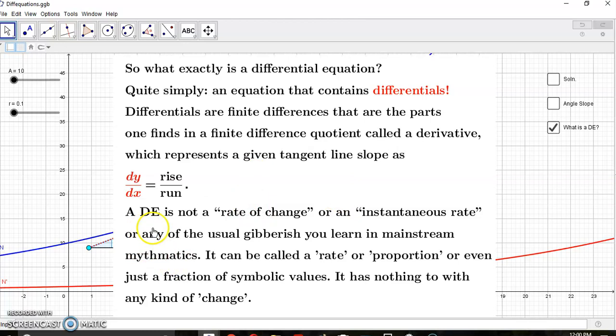A DE is not a rate of change or an instantaneous rate or any of the usual gibberish you learn in mainstream mathematics. So it's really just, it can be called a rate or a proportion or even just a fraction of symbolic values. It has nothing to do with any kind of change. But in order to pass your exams, you need to understand how to relate this gibberish to what is actually meant in reality. I encourage you to go and watch those videos.